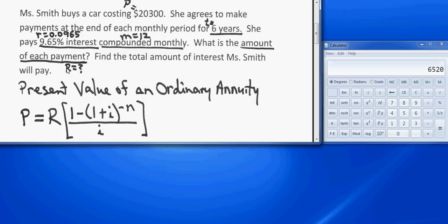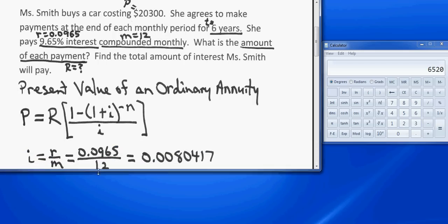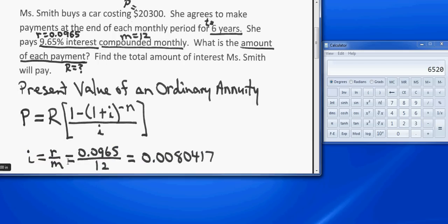Once we know that, it's simply a matter of plugging in the formula. We know that little i is little r over m, so that comes out to be 0.0965 divided by 12, and that's about 0.00804167.